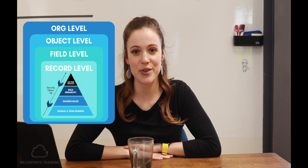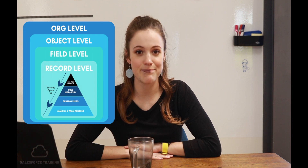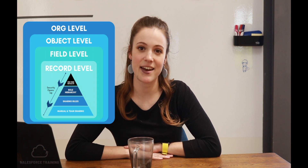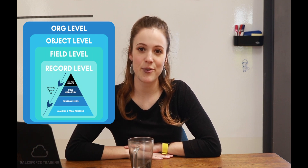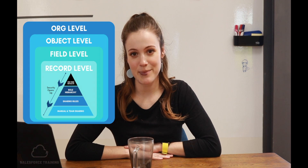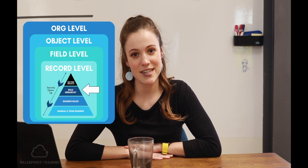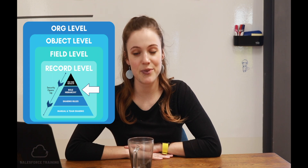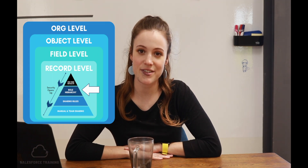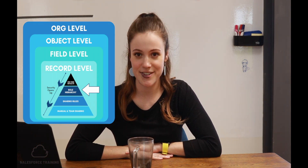We start with the org-wide defaults, where we lock down as much as we can the level of access to records. Next up is roles and role hierarchies, which opens up access to certain records based on the particular role hierarchies of our users.